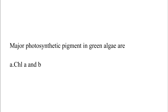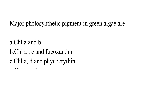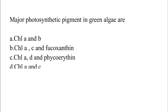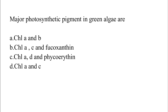Major photosynthetic pigment in green algae are Option A: Chlorophyll A and B. Option B: Chlorophyll A, C and Phycoxanthin. Option C: Chlorophyll A, D and Phycoerythrine. Option D: Chlorophyll A and C. The correct answer is Option A, which is Chlorophyll A and B.